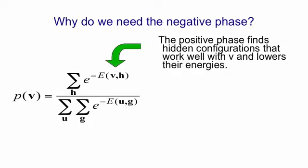So if you look at the top term, what the first term in the learning rule is doing is decreasing the energy of terms in that sum that are already large. And it finds those terms by settling to thermal equilibrium with the vector v clamped, so that it can find an h that goes nicely with v, that is, gives a nice low energy with v. Having sampled those vectors h, it then changes the weights to make that energy even lower.